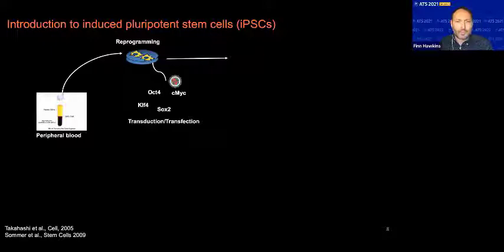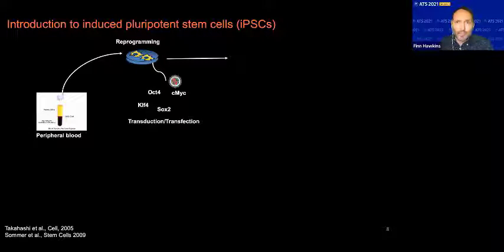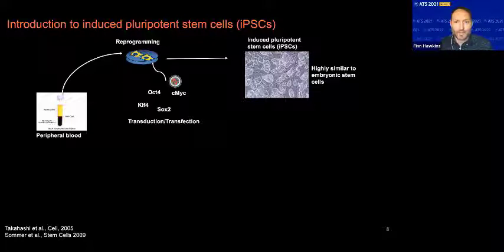Some of those cells will be reprogrammed into a cell that is highly similar to an embryonic stem cell. The transcription factors we typically use are OCT4, CMYC, KLF4, and SOX2 — now referred to as the Yamanaka factors. The cells that over-express these transcription factors and become completely reprogrammed into an embryonic stem cell-like state are easily recognizable morphologically, because they form colonies that look highly similar to mouse and human embryonic stem cells.